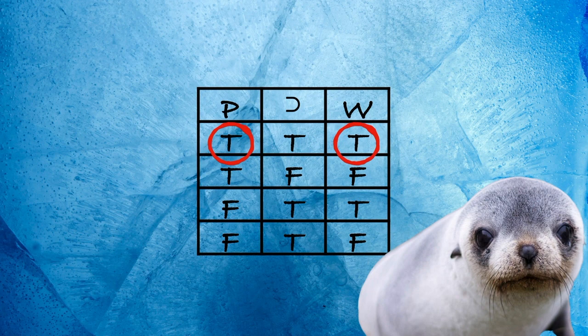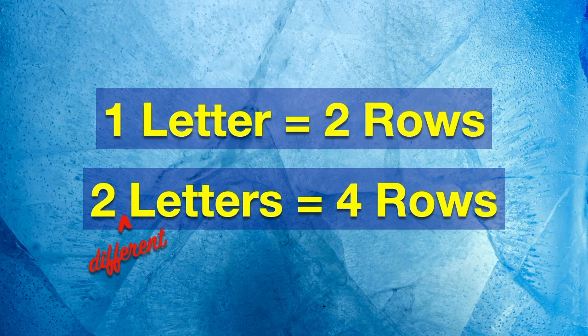That's how you capture all the possibilities. They might both be true, one or the other false, or both false. So, one letter, two rows, and two different letters, four rows.